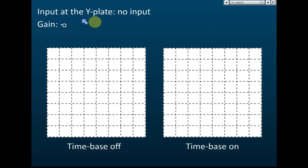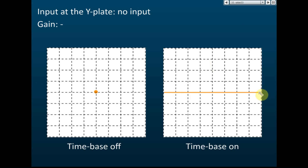If there is no input, the Y gain doesn't affect anything. With the time base off, the spot stays at the center. If it's not at the center, use the X or Y offset to move it there. When the time base is on, you see a straight line moving from left to right — like the instrument used to measure heartbeat in hospitals. If the time interval is very small, the movement is too fast to see and it appears as a static straight line.